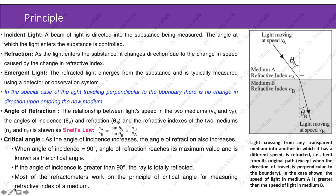The next slide discusses the principle of refractometry. Incident light is a beam of light that is directed into the substance being measured; the angle at which the light enters the substance is controlled. As the light enters the substance, it changes direction due to the change in speed caused by the change in refractive index. The refracted light, i.e. emergent light, emerges from the substance and is typically measured using a detector or observation system. In the special case of light traveling perpendicular to the boundary, there is no change in direction upon entering the new medium.